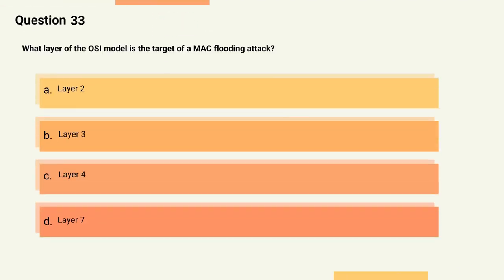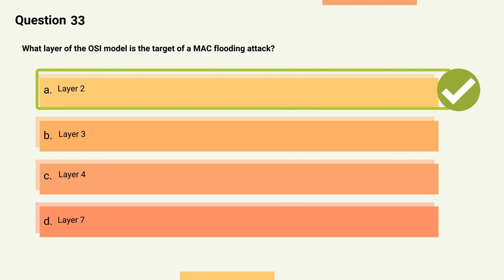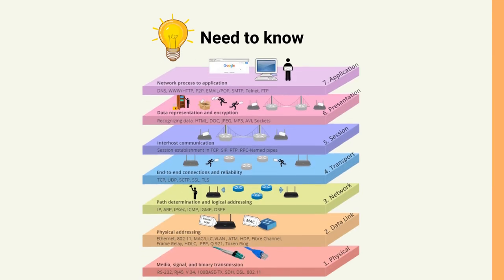Question 33: What layer of the OSI model is the target of a MAC flooding attack? Options: A) Layer 2, B) Layer 3, C) Layer 4, D) Layer 7. The correct answer is Option A, Layer 2. Explanation: A MAC flooding attack targets the data link layer, Layer 2, by flooding a switch's MAC address table with fake MAC addresses, causing the switch to broadcast traffic to all ports, allowing an attacker to intercept traffic.